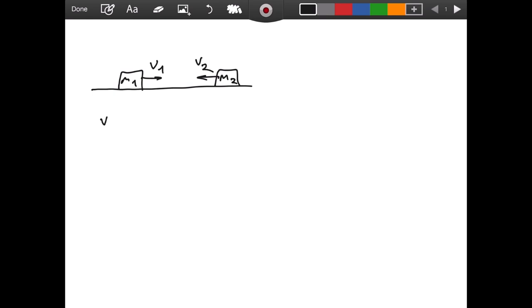at the end we saw that v1 prime, which is the final velocity of the first block, is equal to 2 m2 v2 plus v1 times (m1 minus m2) divided by the sum of the masses. And we had a similar formula for v2 prime.